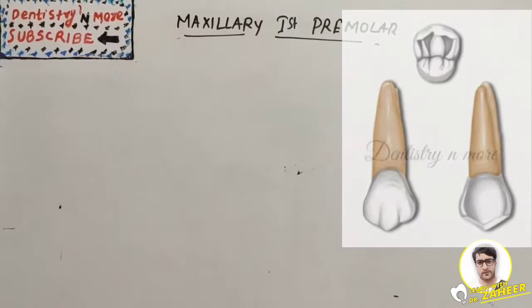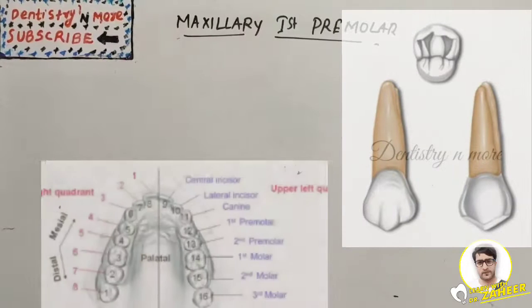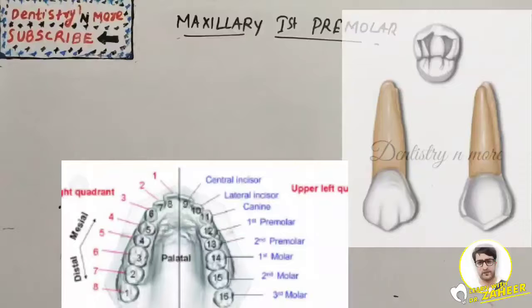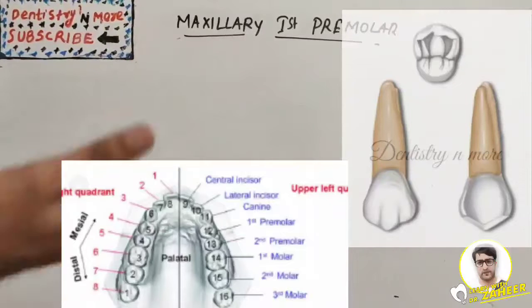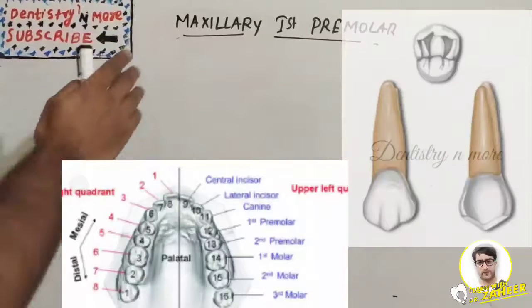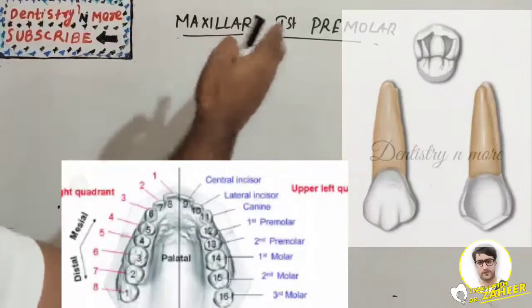Hello everyone, welcome back to another session in Dentistry and More. We are continuing our dental anatomy sessions. So far we finished maxillary central incisor, maxillary lateral incisor, maxillary canine, then we jumped to mandibular canine. Now we are back to maxillary — that is the first premolar. We finished anterior teeth; now we are into the posterior teeth.